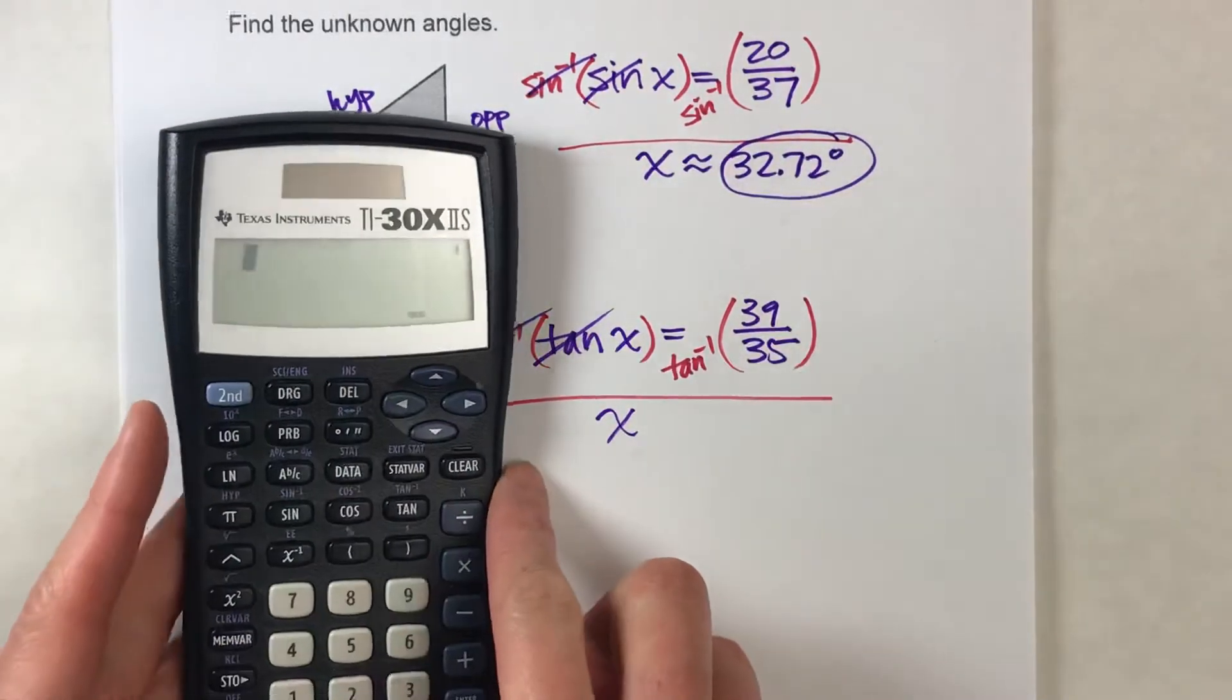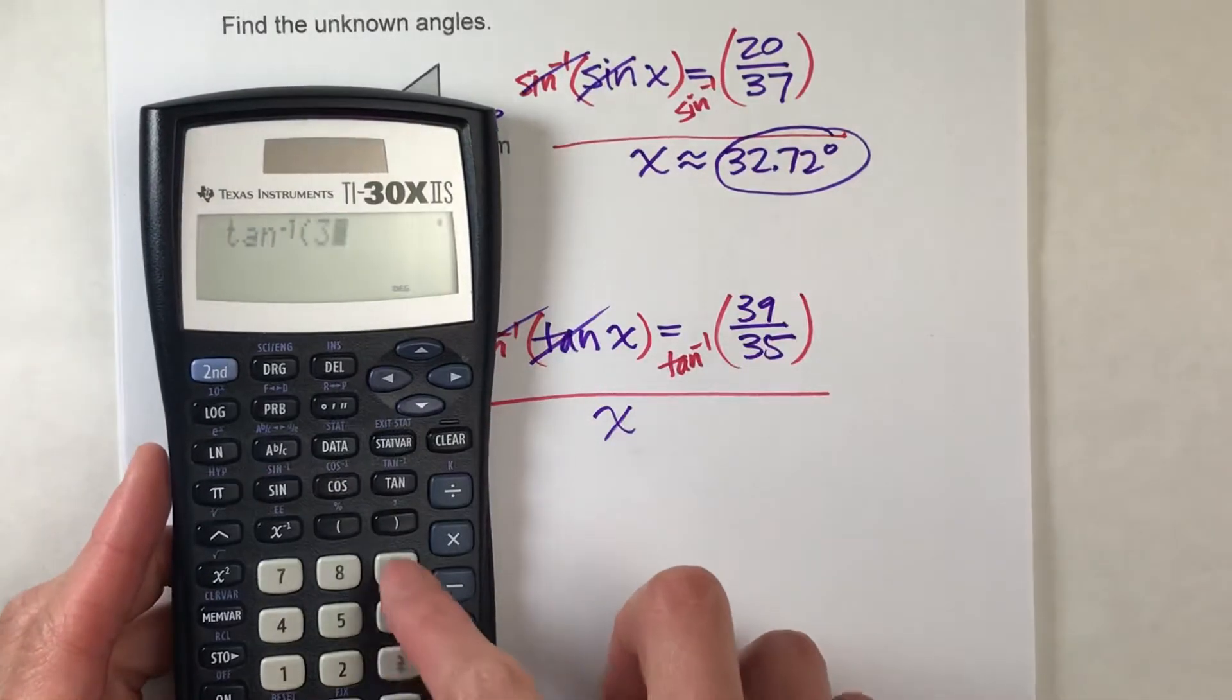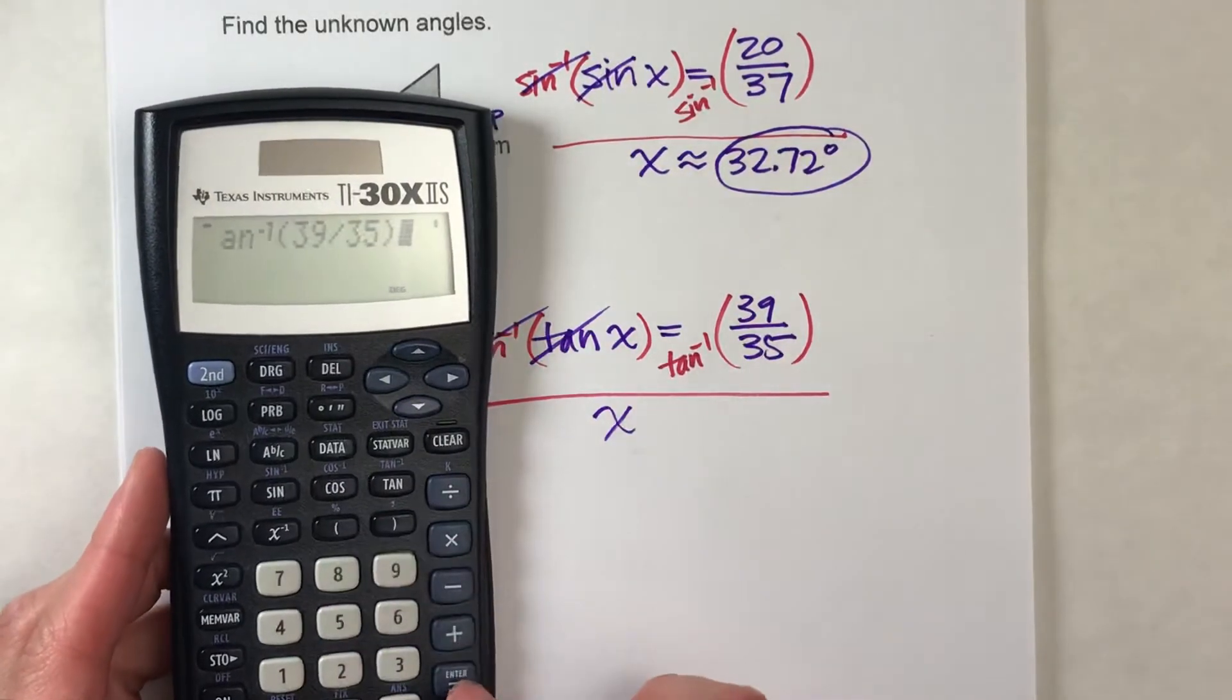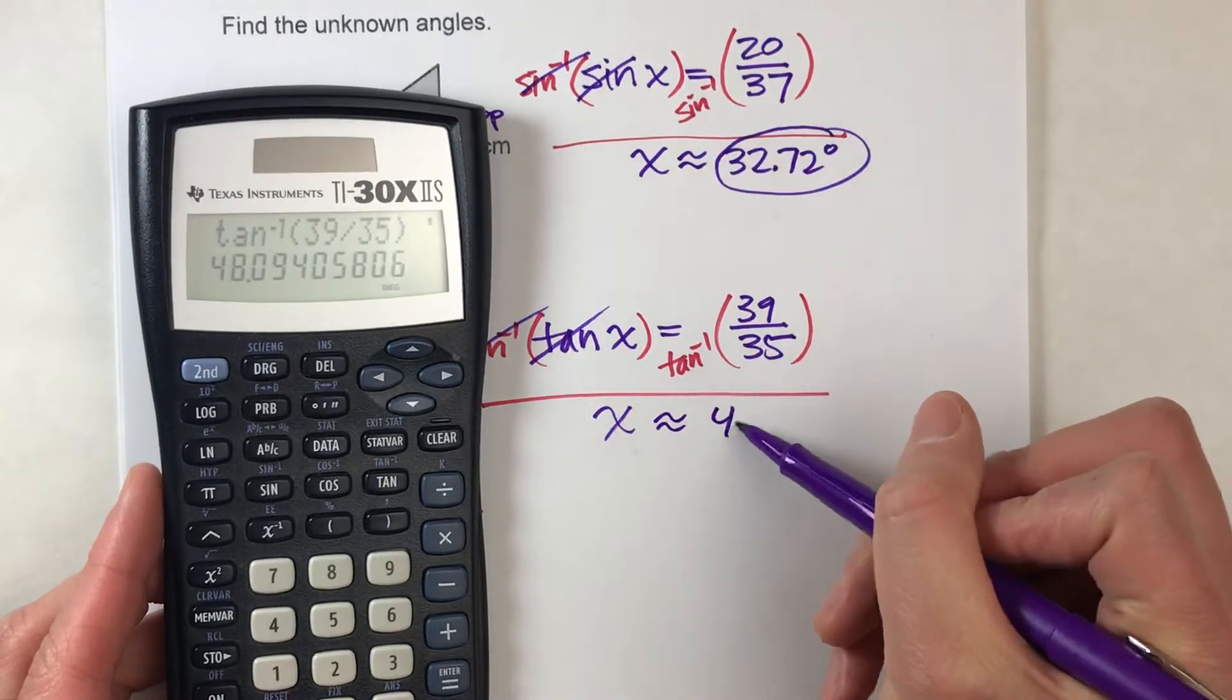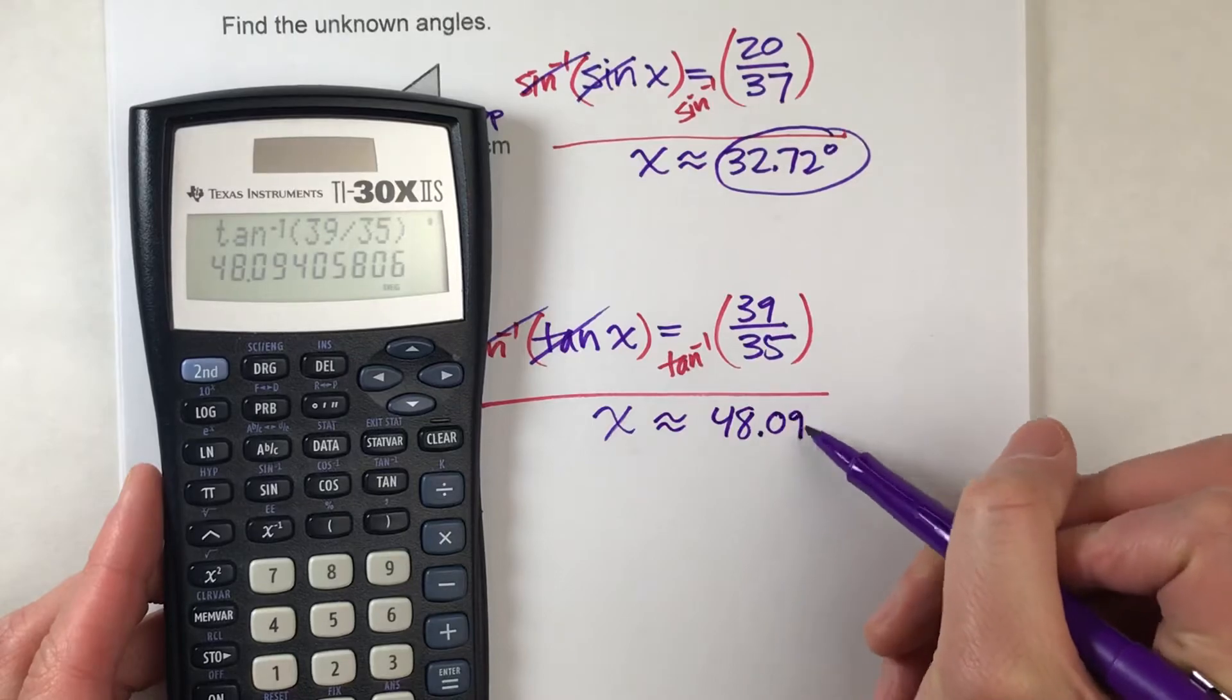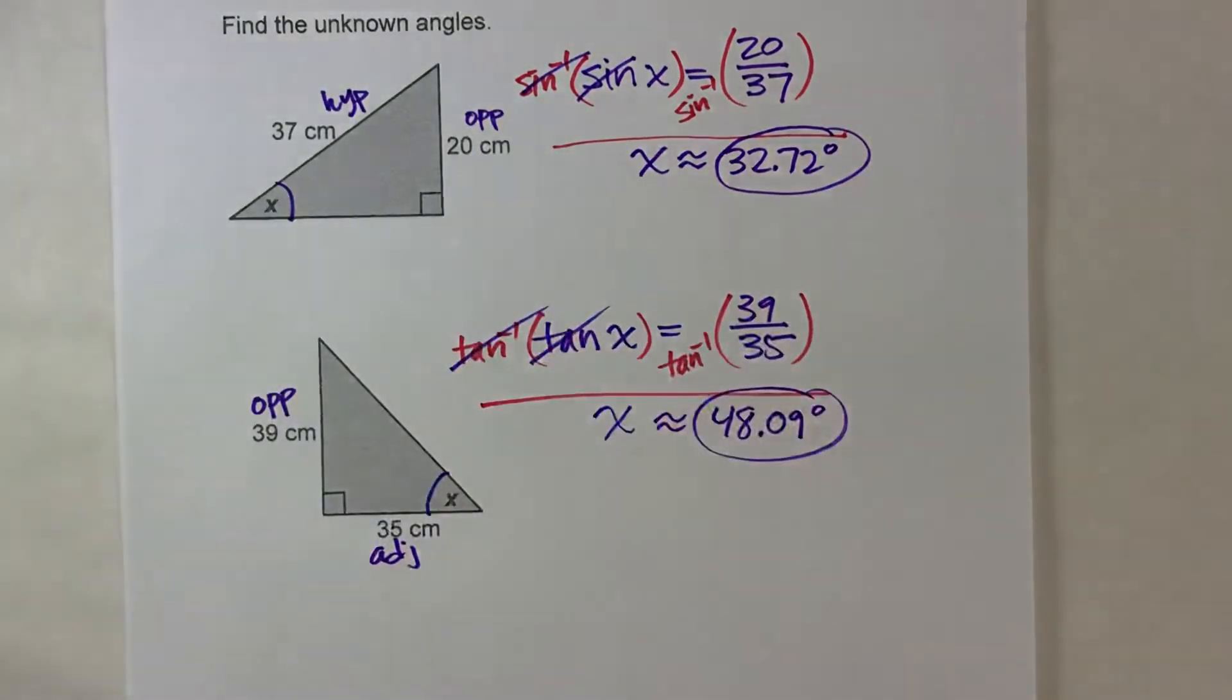On the other side, I'm going to need my calculator. The inverse tangent of 39 divided by 35. There it is. It turns out to be about 48.09 degrees. And that's my angle measure right there.